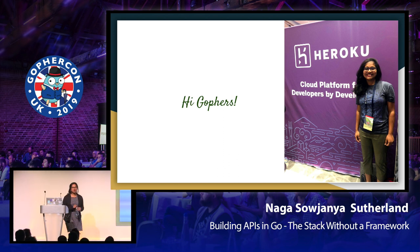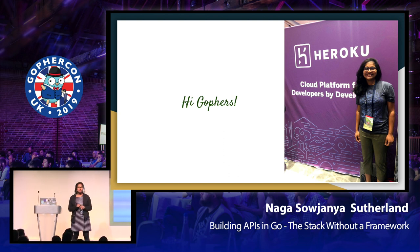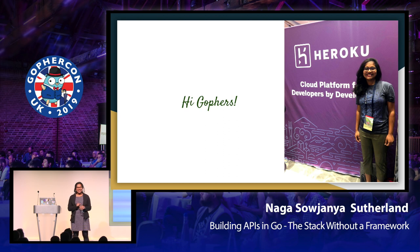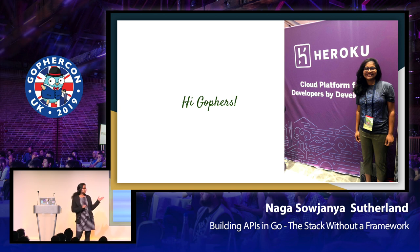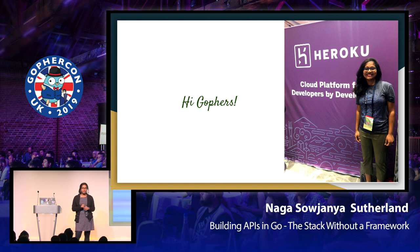My name is Sojanya. I'm a senior engineer at Heroku. How many of you have heard about Heroku? Oh my gosh, a lot of people — very cool. Heroku is a developer platform that makes it super easy to deploy your applications onto the cloud. At Heroku, I'm on the runtime team that is responsible for dyno container orchestration, and these are distributed systems written in both Ruby and Go. I write systems using both gRPC and REST.